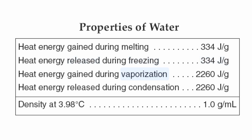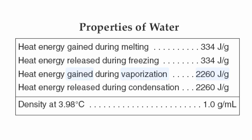Vaporization or evaporation is going to need a significant increase in heat content — about 2,260 joules per gram — and with evaporation or vaporization, energy is taken in. With condensation, water vapor changes back into liquid water, and it's going to need the same quantity, 2,260 joules per gram, but in this case energy is going to be given off.